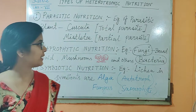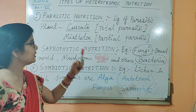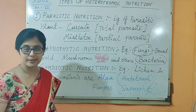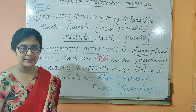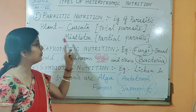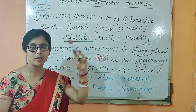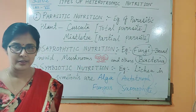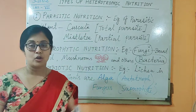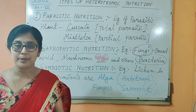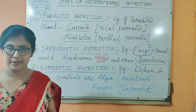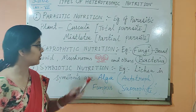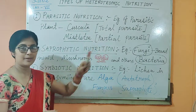In this relation, the host is harmed whereas the parasite is benefited. There are two categories of parasite in nutrition: total parasite and partial parasite. The plants which are completely dependent on the host are called total parasites, whereas plants which are not completely dependent — only partly dependent — are called partial parasites.